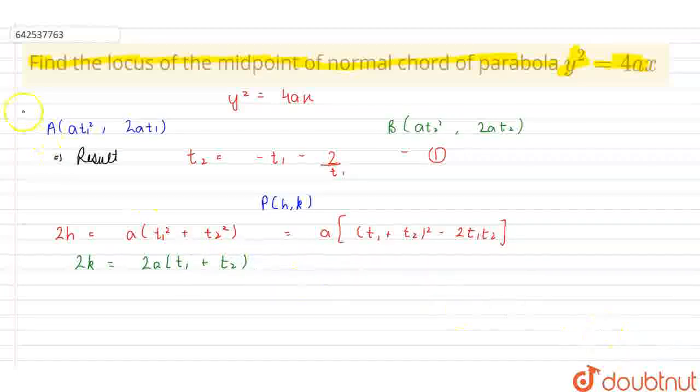From equation 1, we can see that t1 plus t2 is equal to minus 2 upon t1. Also, t1 into t2 equals to minus t1 square minus 2.